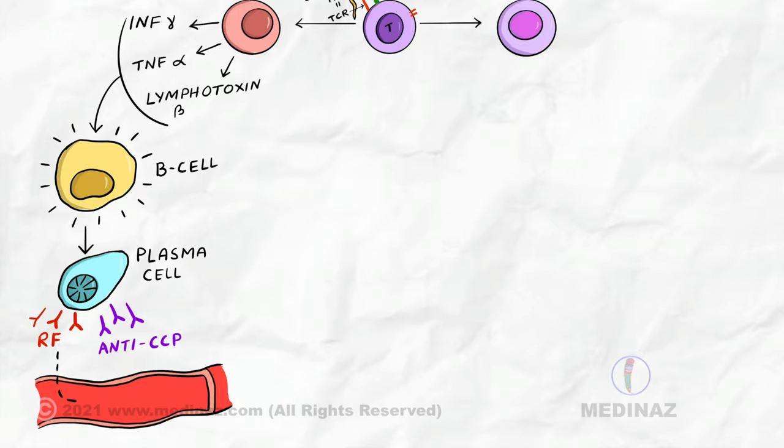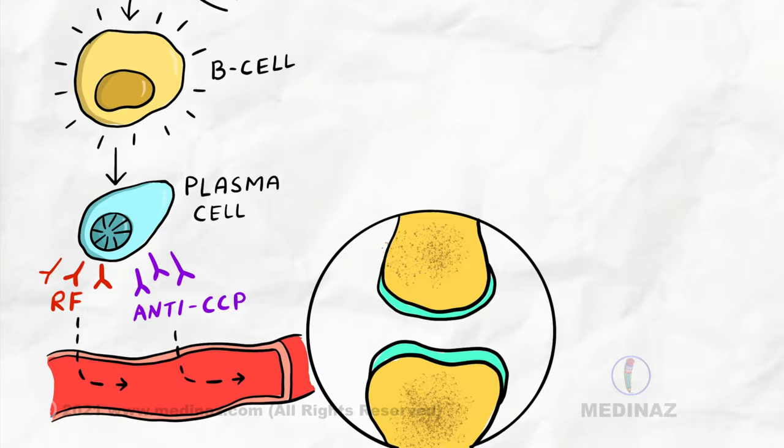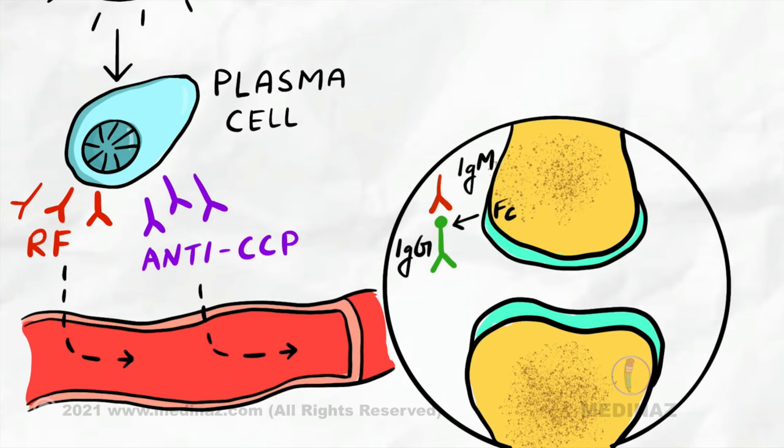Now, autoantibodies like rheumatoid factor, which is an IgM antibody, targets the Fc portion or constant portion of altered IgG antibodies and form immune complexes. Another antibody is anti-CCP antibody, which targets citrullinated proteins.